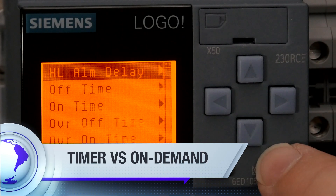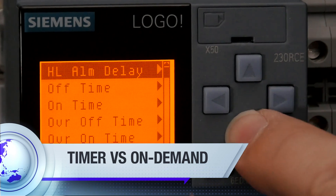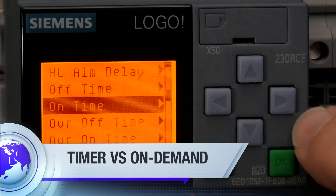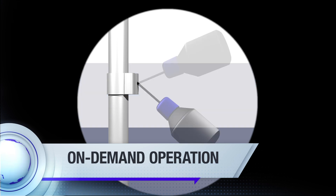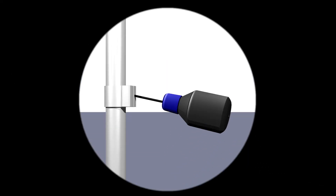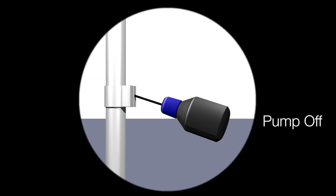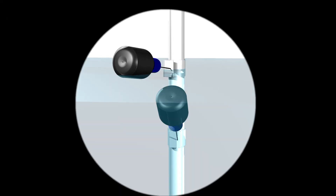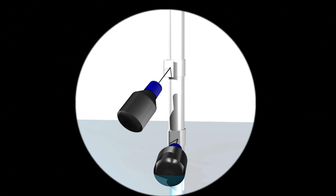Orenco Systems control panels operate in one of two modes: either on-demand pump operation or time dose pump operation. In on-demand operation, the pump will turn on or off based on the position of the pump floats. When the pump on float is in the up position, the pump will energize and will not turn off until the pump off position is reached, or the liquid level in the tank causes the pump off float to reach the down position.